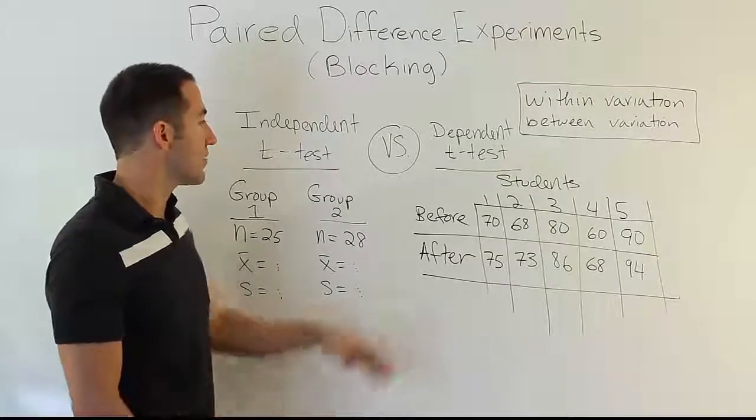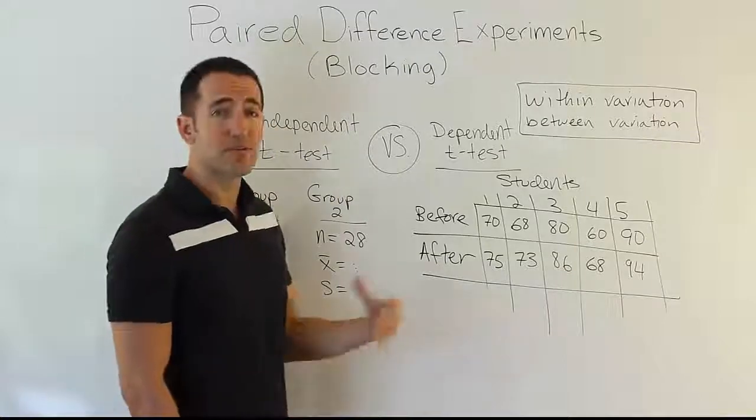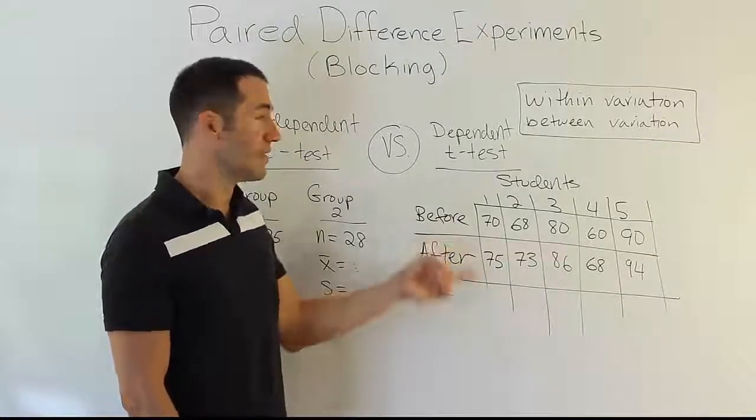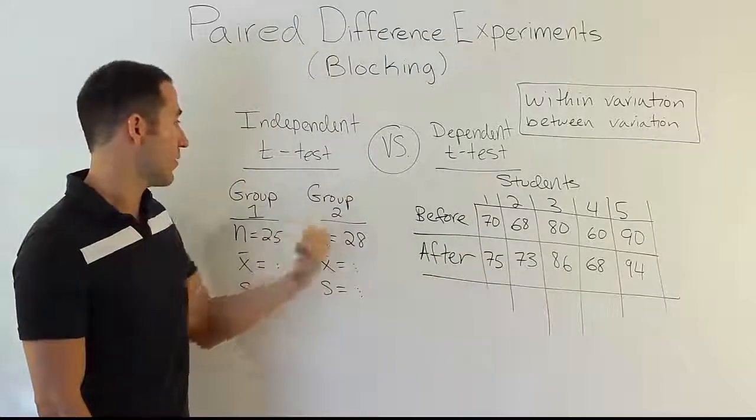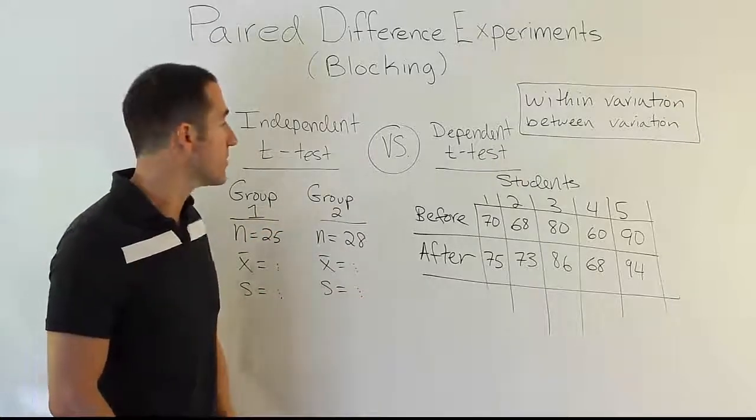Of course, outside of that, if you don't have all this shown to you, but you just have summary information that the problem is provided, then you have to kind of read the description of the problem and see if there is dependency, or whether there is a scenario where the two groups are independent. Unfortunately, that just comes down to critical reading at that point.